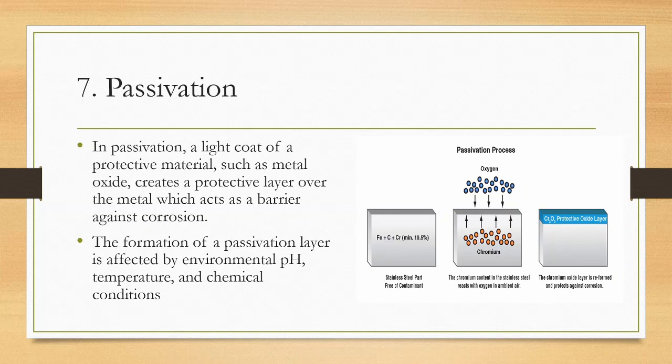Passivation: In passivation, a light coat of protective material such as metal oxide creates a protective layer over the metal which acts as a barrier against corrosion. The formation of this layer is affected by environmental pH, temperature, and surrounding chemical composition. A notable example of passivation is the Statue of Liberty. It is coated with a blue-green patina caused by several chemical reactions which serves to protect the copper metal underneath.